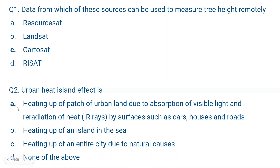The correct answer is A: heating up a patch of urban land due to absorption of visible light and re-radiation of heat, that is infrared rays, by surfaces such as cars, houses, and roads. Wherever there is a concrete jungle, there is an urban heat island effect.